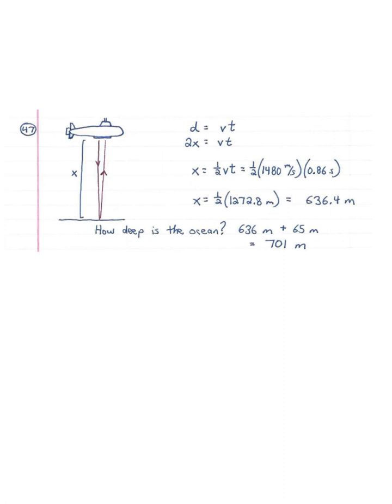Number 47: a submarine 65 meters deep emits a sonar wave. The wave reflects from the bottom and returns to the submarine 0.86 seconds after it was emitted. How deep is the ocean at that point? Drawing a picture, the sound wave goes down then comes back up, and x is the distance between the submarine and the ground below. The distance the wave travels, d, equals speed times t. The back-and-forth complete lap is 2 times x. Solving for x: x equals one-half vt. Using the speed of sound in water — 1480 meters per second — times the time, we get x equals one-half of 1278.8 meters.